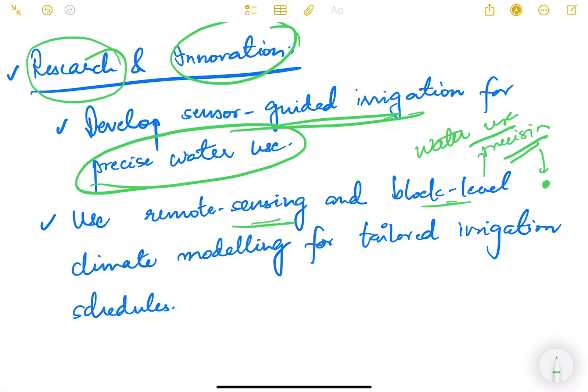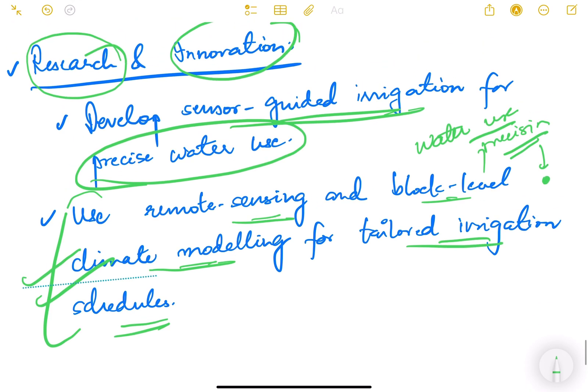Use remote sensing and block level climate modeling for tailored irrigation schedules. These are possible with AI and blockchain technologies. Remote sensing and satellites, all these technologies are available, only thing is we need to tailor them for irrigation purposes. This is about various government schemes, the challenges, and the proposed solutions, basically the technological solutions. These can be useful to you while answer writing also.